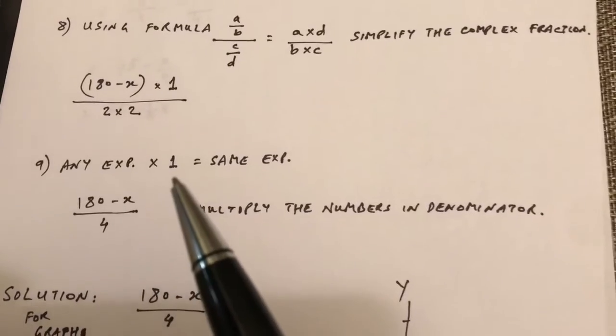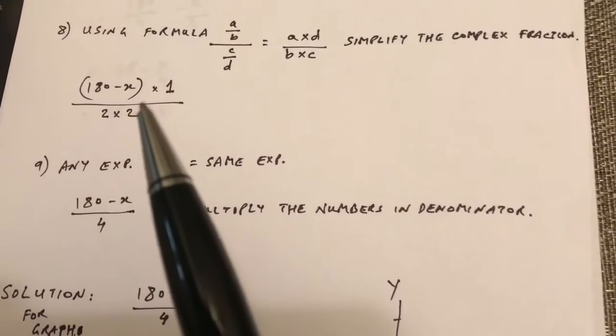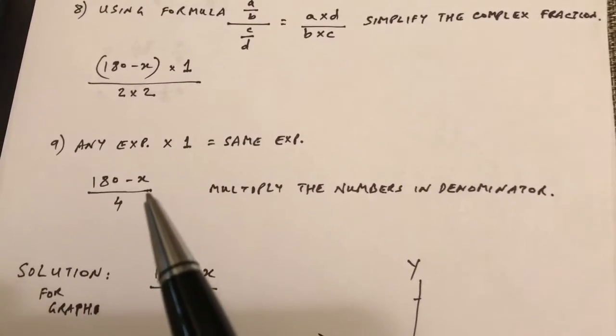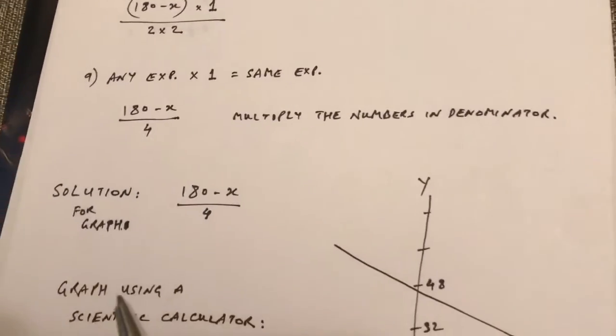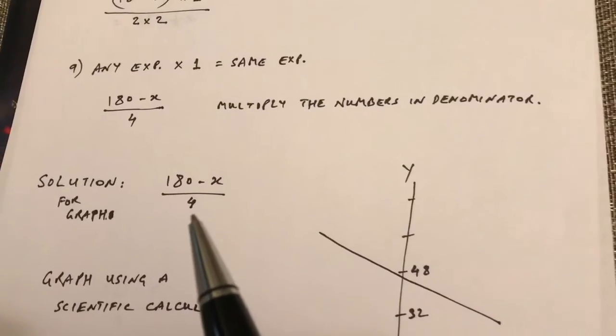So any expression times 1 is the same expression. So 180 minus x times 1 is 180 minus x. 2 times 2 is 4. Multiply the numbers in denominator. We did that. So the solution is 180 minus x over 4.